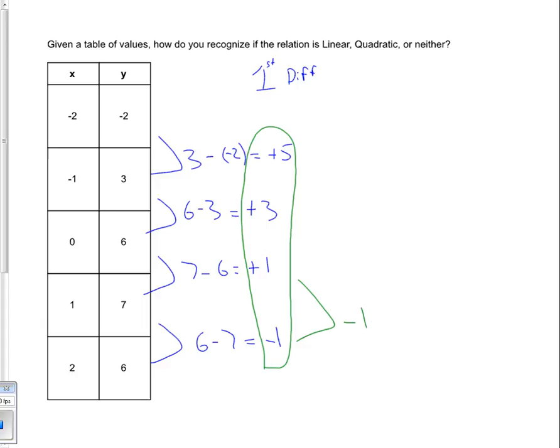So negative 1 minus positive 1 equals negative 2. Then I do 1 minus 3, that equals negative 2. And then 3 minus 5, and that equals negative 2.